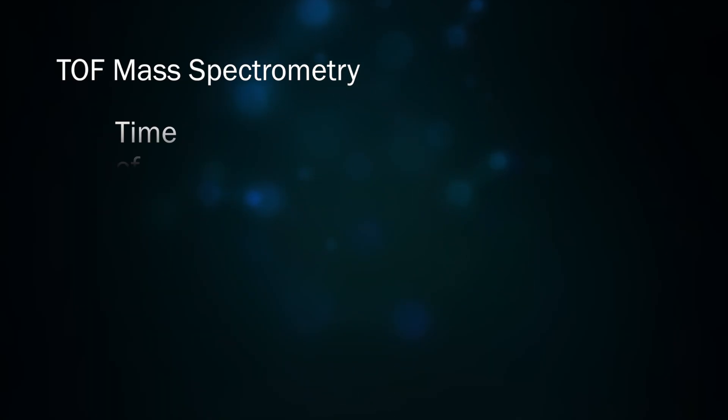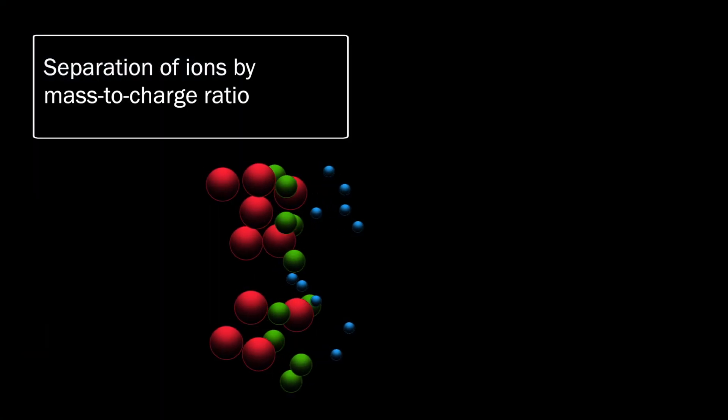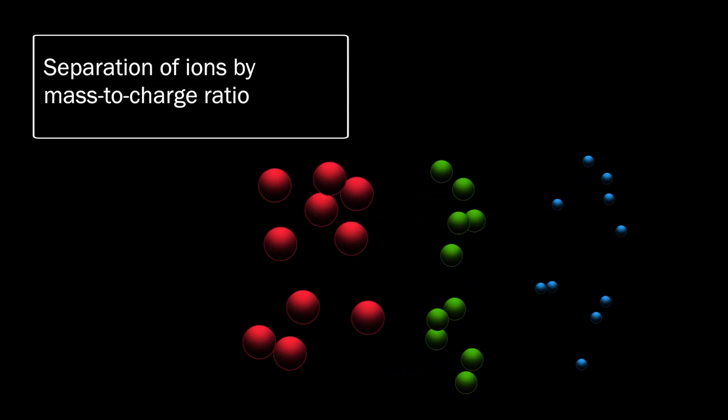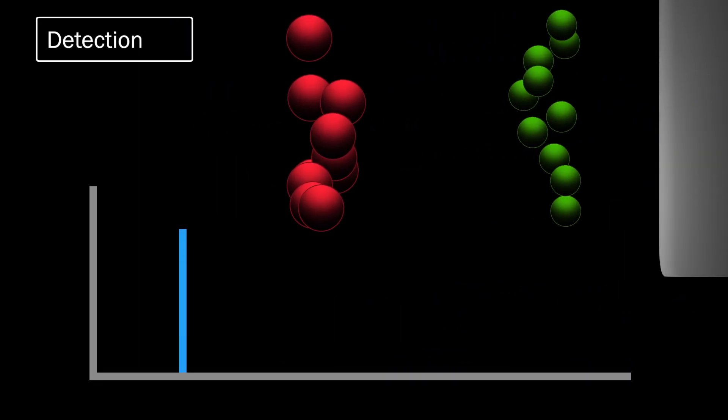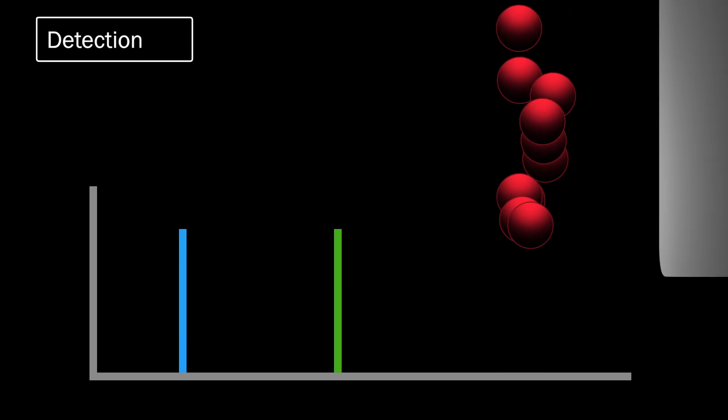TOF stands for Time of Flight, a mass spectrometry method that separates ions by their mass-to-charge ratio and determines that mass-to-charge ratio by the time it takes for the ions to reach a detector.